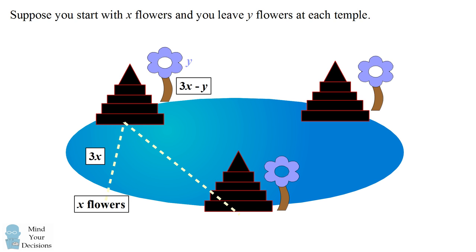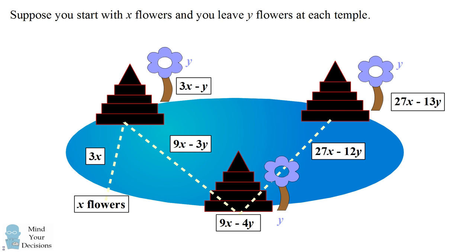You then swim in the pond, which triples the number of flowers you have to 9x minus 3y. You leave y flowers at the second temple, which leaves you with 9x minus 4y flowers. You then swim in the pond once more, which triples the number of flowers you have to 27x minus 12y. You leave y flowers at the third temple, and you have 27x minus 13y flowers.